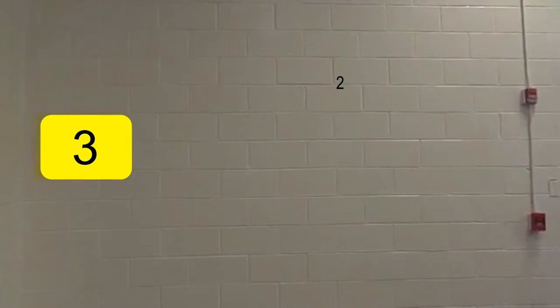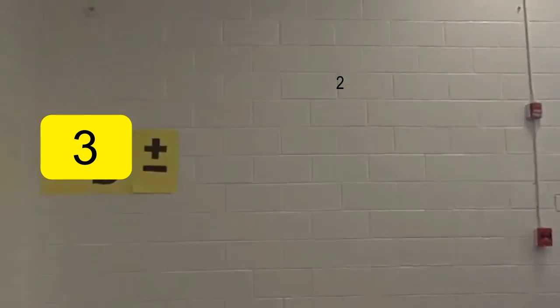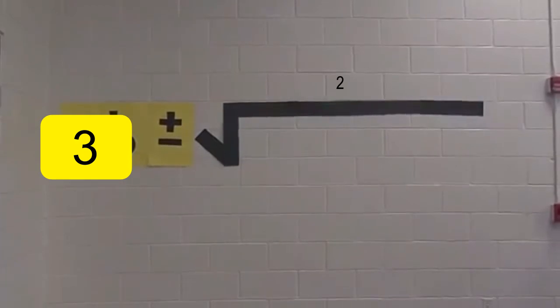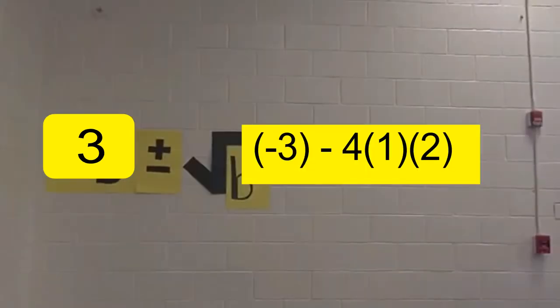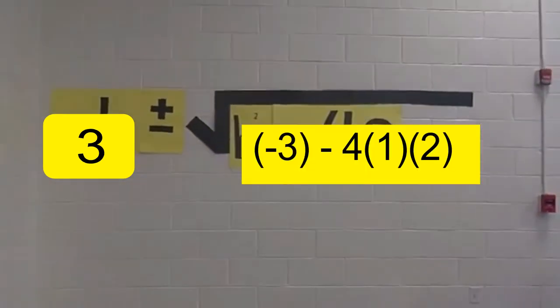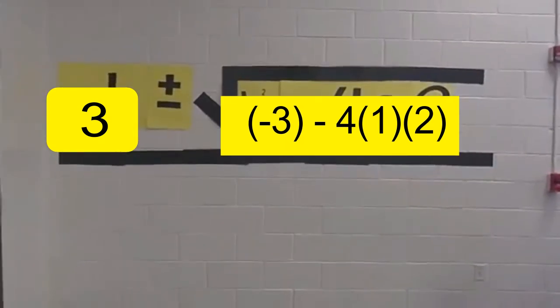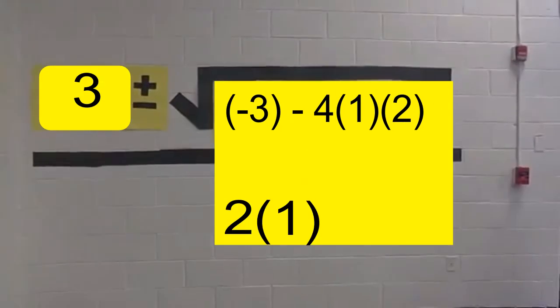Negative 3, plus or minus square root of b squared minus 4ac, all over 2A.